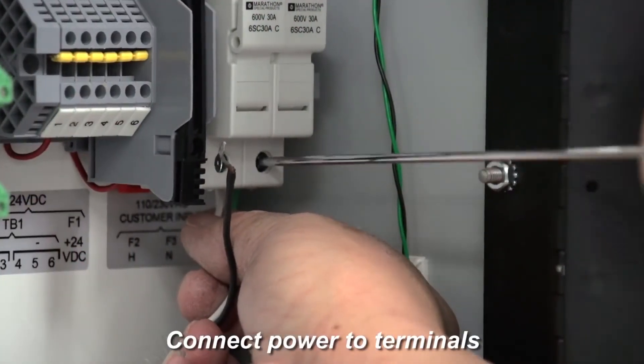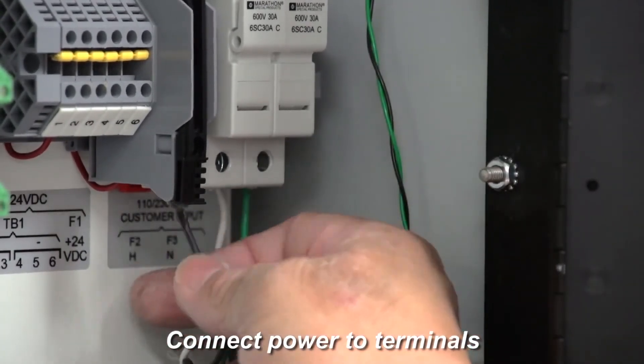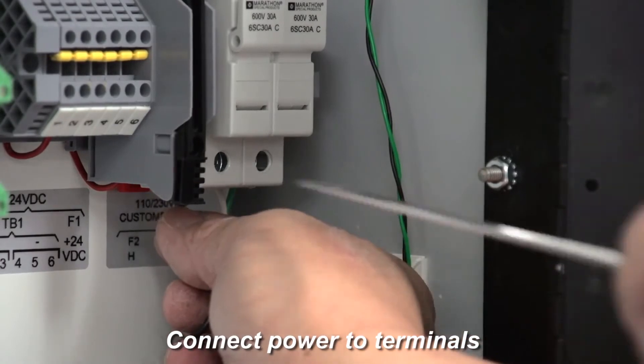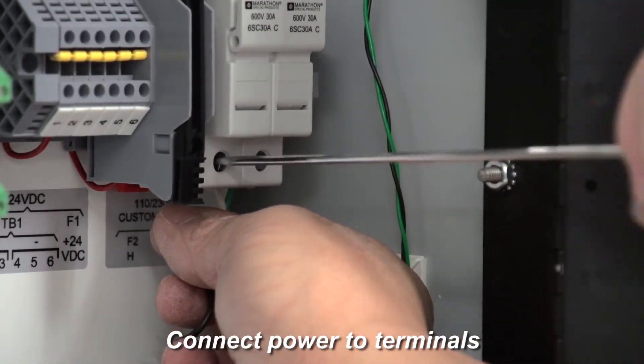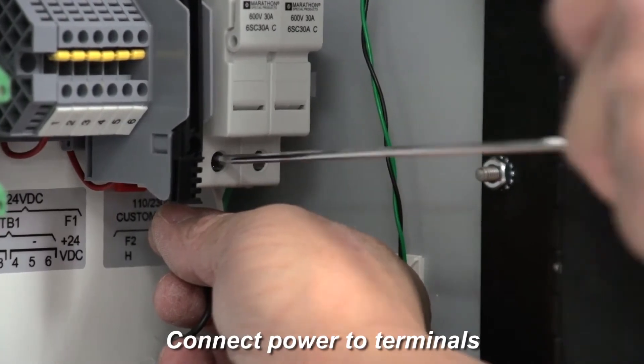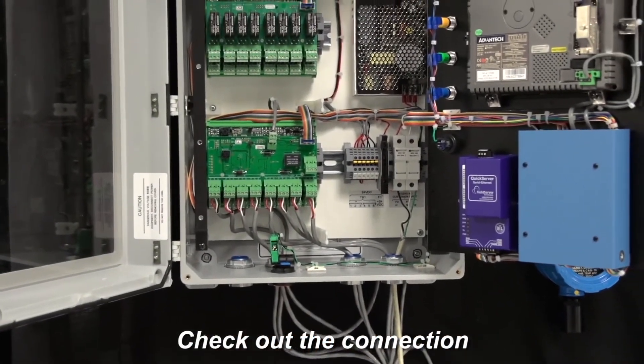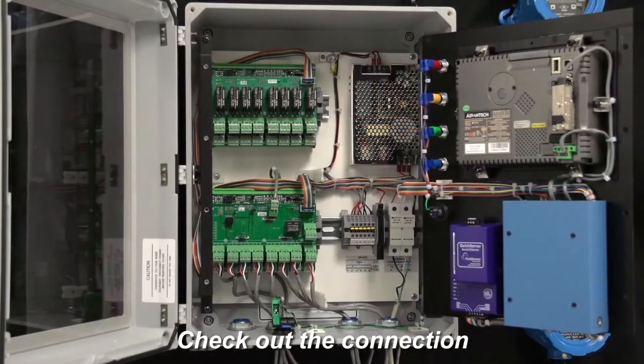Connect the three power wires to the terminal on the right side of the back panel following the instructions provided. Double check all of your connections to make sure they are properly connected and tight.